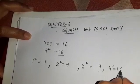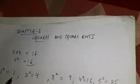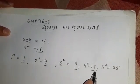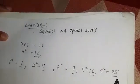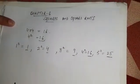4 square is equal to 16. 5 square is equal to 25. So all these numbers 1, 4, 9, 16 and 25, these numbers are square numbers and these are also called perfect squares.